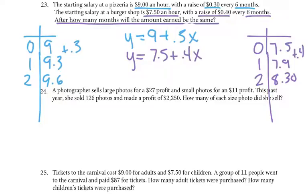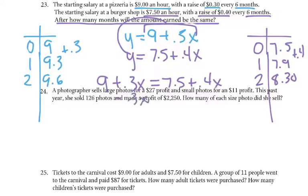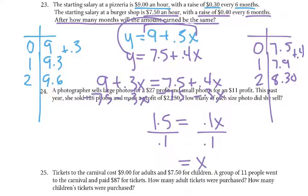We could graph from this point and find where they intersect, or use substitution — this whole piece substitutes in for that. So I'd have 9 plus 0.3x equals 7.5 plus 0.4x. I would subtract 0.3x to get 0.1x, subtract 7.5, and get 1.5 equals 0.1x. Divide by 0.1, and we'd get x equals 15. Plugging back in, 0.3 times 15 plus 9 gives us $13.50.